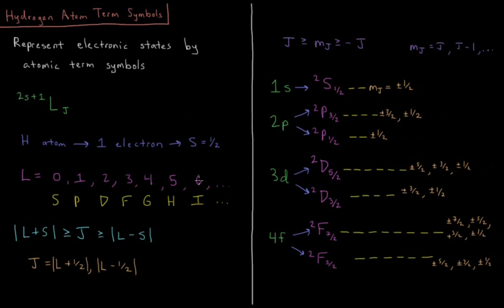So that's the basics of term symbols for hydrogen atoms. It always has to be a doublet, because there's only one electron. The value of L is just going to equal the value of the quantum number L for that orbital. And j is either going to be L plus 1 half, or L minus 1 half.